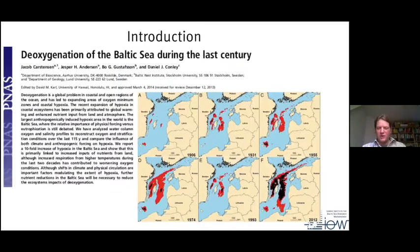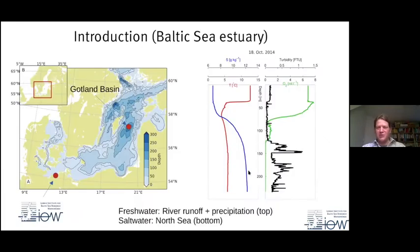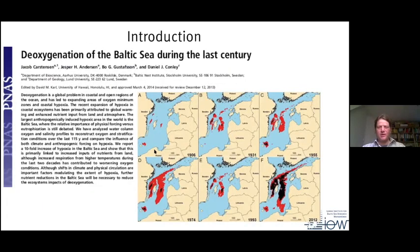In the middle you have this halocline, which is a massive transport barrier. With oxygen, you see that it's well oxygenated at the top, then it strongly decreases at the halocline, it comes back a little bit and then it goes to zero, which is called anoxic water mass here. And if you look over time, you can see the evolution of this anoxic water mass. Almost 100 years ago, we haven't had any of these anoxic water masses.